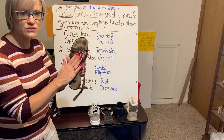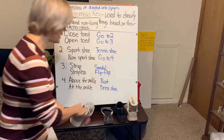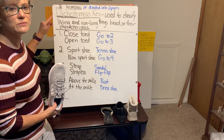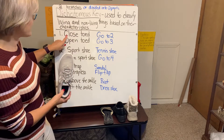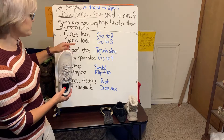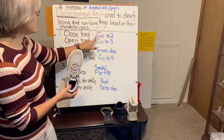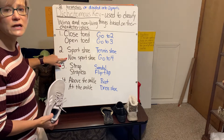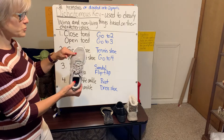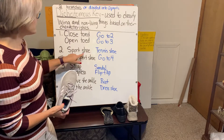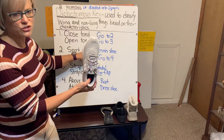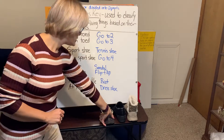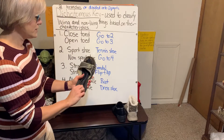Next shoe — go back to the top every single time. Is it closed-toed or open-toed? This one is closed-toed, so I go to number two. Number two asks: is it a sport shoe or a non-sport shoe? This is a sport shoe — something I can run in. So it is my tennis shoe.